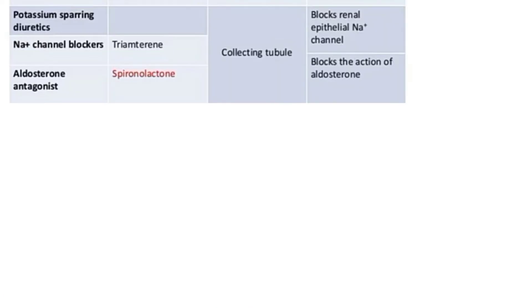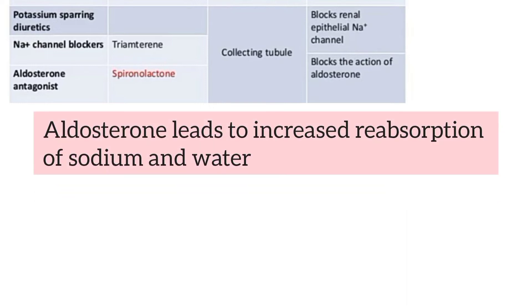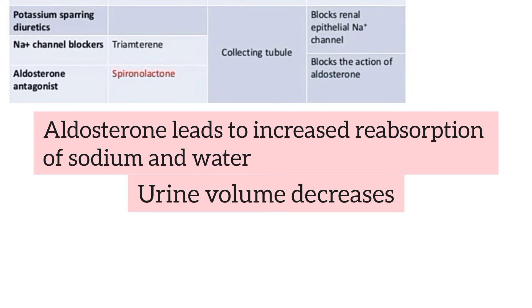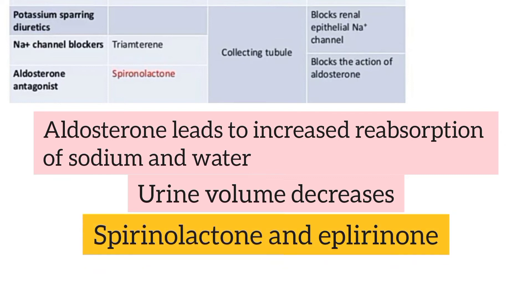The second classification is aldosterone antagonists. Aldosterone is a hormone that normally increases sodium and water reabsorption. Aldosterone antagonists oppose this action, reducing sodium-water reabsorption, which increases sodium and water excretion in urine producing a diuretic effect. Examples are spironolactone and eplerenone.